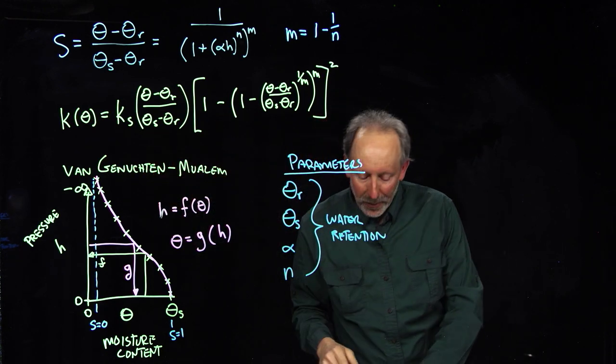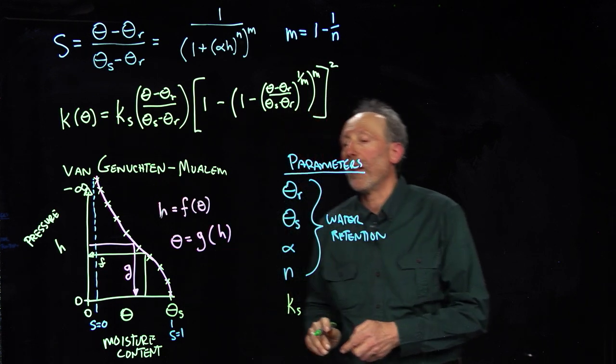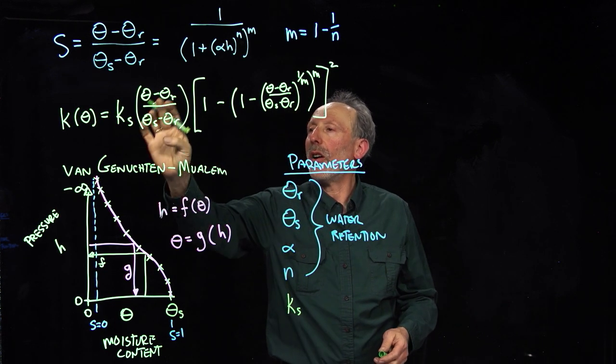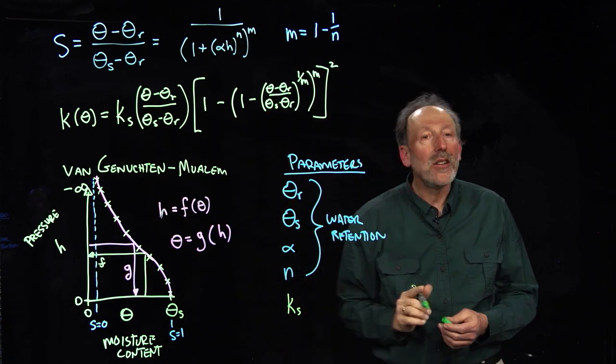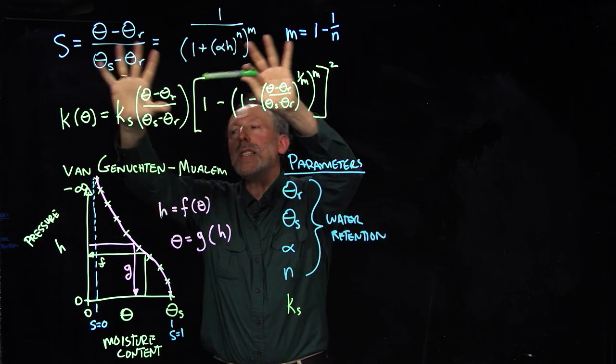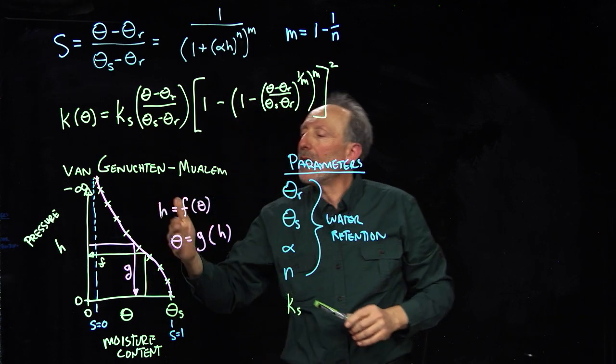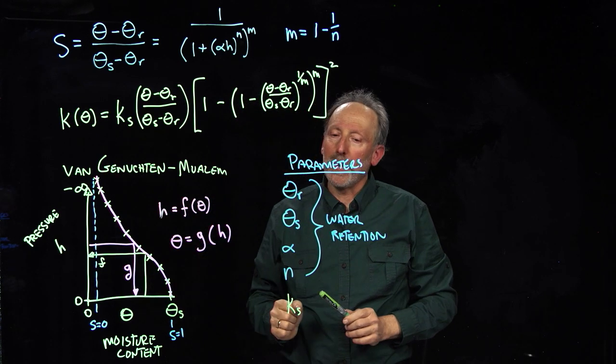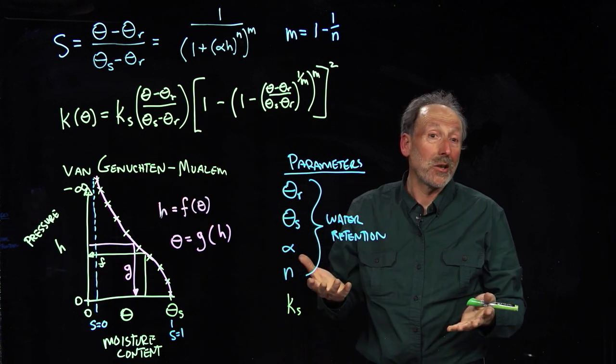So, basically, what we have here is only one additional parameter, which is K sat. All of the rest, theta r, theta s, and the n, all came from our retention experiment. So, in order to get the complete description of the retention of water and the hydraulic conductivity, what we need to do is one draining experiment and one column experiment, where we measure the hydraulic conductivity, just like Darcy did.